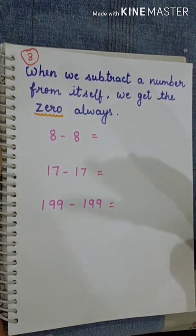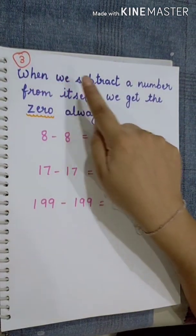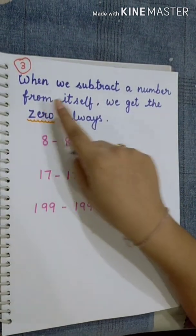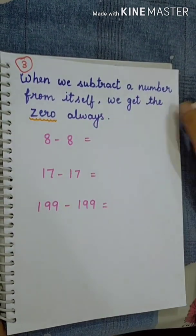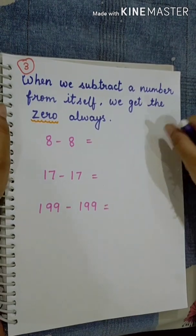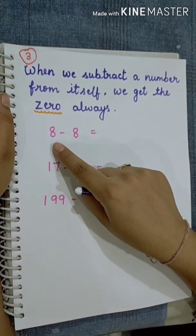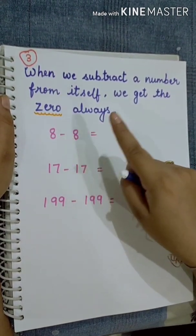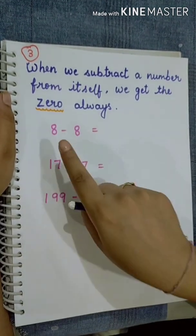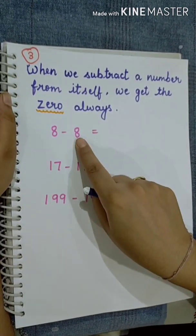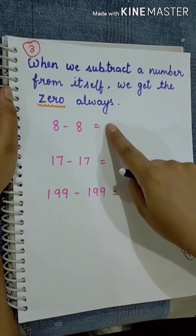Property number 3: when we subtract a number from itself, we always get 0. That means if we subtract a number from itself, we get 0. For example, 8 minus 8 is equal to 0.